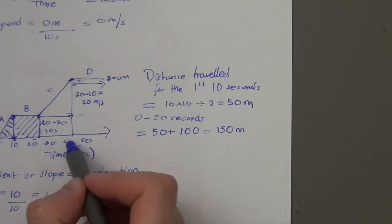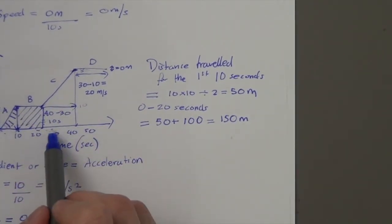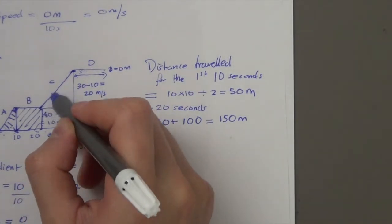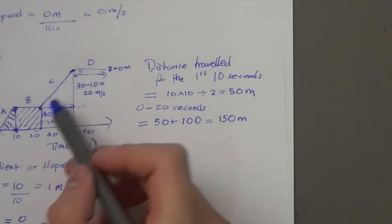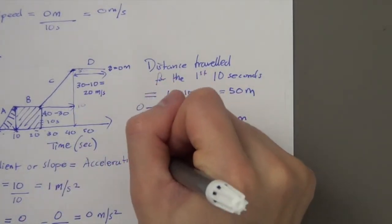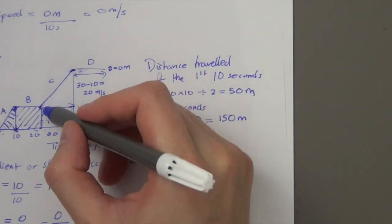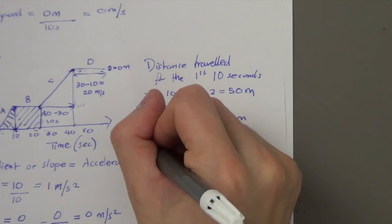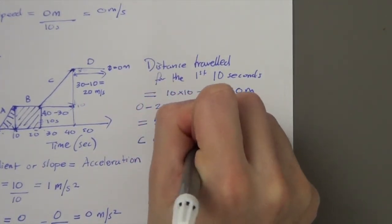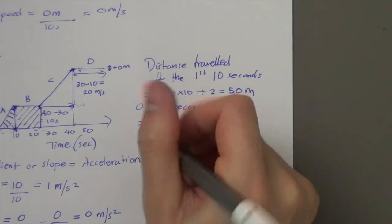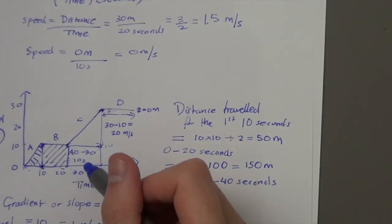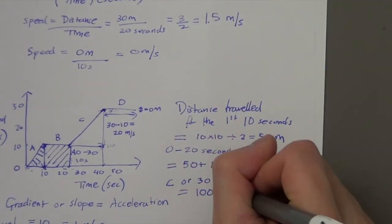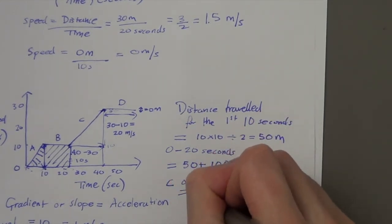What was the distance travelled from 30 to 40 seconds — during period C? I need to work out the area under C. The rectangle part is 10 times 10 = 100 metres. The triangle part is 10 times 20 divided by 2 = 100 metres. So the distance from 30 to 40 seconds is 100 plus 100, giving 200 metres in total.